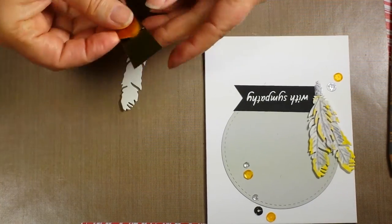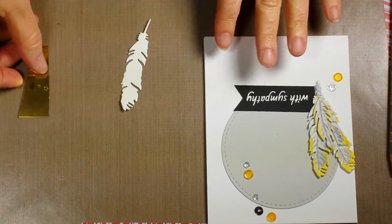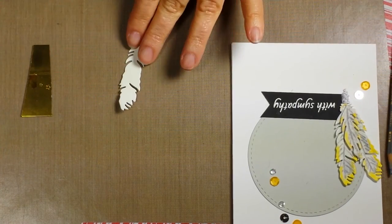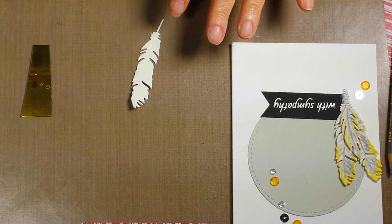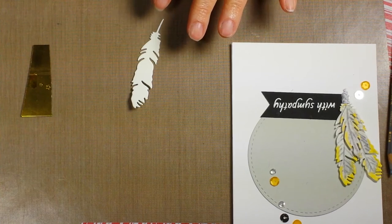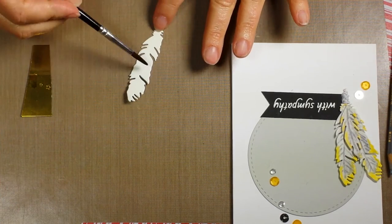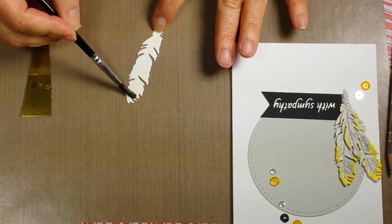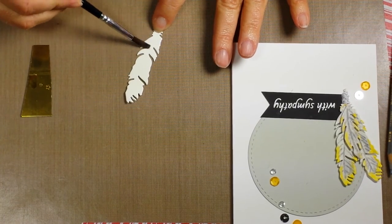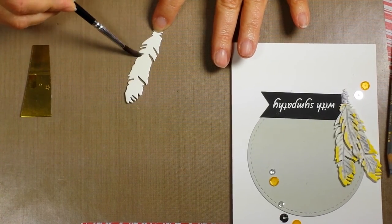I cut it up and I'm going to use one of the corners. I use a clean paintbrush and clean water. I'm going to add water to my watercolor paper.